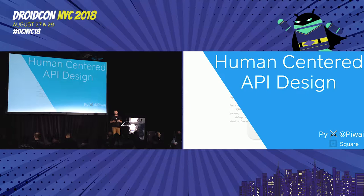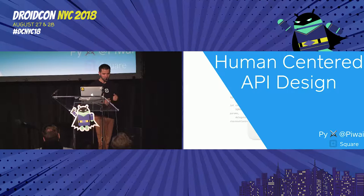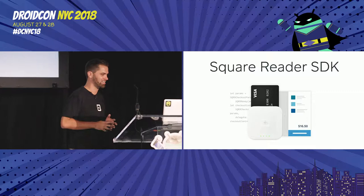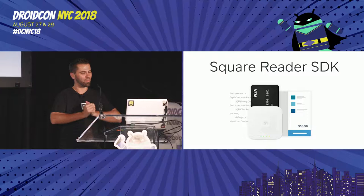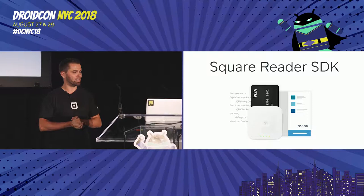I work at Square, and a month ago my team released something called the Square Reader SDK. In doing that we learned a lot about APIs, and so that's what I'm going to be talking about today. The Square Reader SDK is an SDK that connects to Square payment hardware and allows you to build a custom point of sale app.